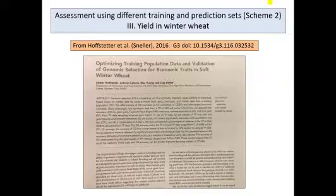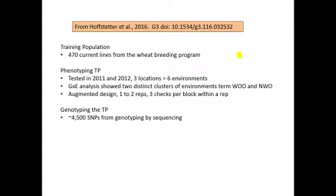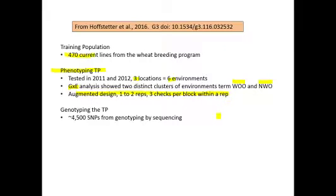Here's another publication that uses scheme 2 to assess whether genomic selection is working. This one is in winter wheat, and I am the PI for this project and a co-author on this paper. Here's our training population: 470 lines from current breeding lines from our breeding program, phenotyped across two years, three locations, and six environments for yield. Our G-by-E analysis suggested two different clusters of environments: WOO and NWO. We used an augmented design and had about 4,550 SNPs generated by genotyping by sequencing.